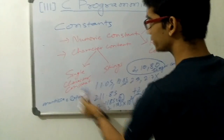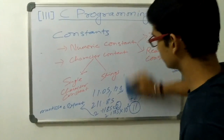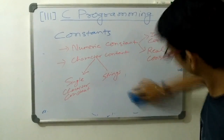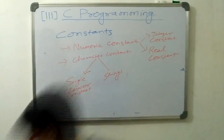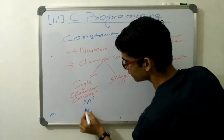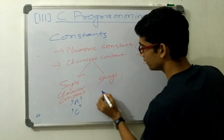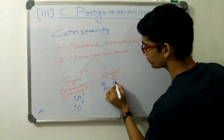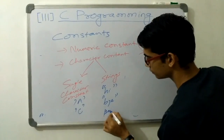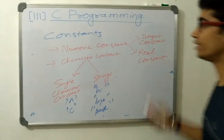Now let us discuss what is single character constant and what is string constant. Characters like A or C — these are known as single character constants. Strings, for example hi, harsh — enclosed by double quotes — these are the string constants. So this was the idea of constants in C.